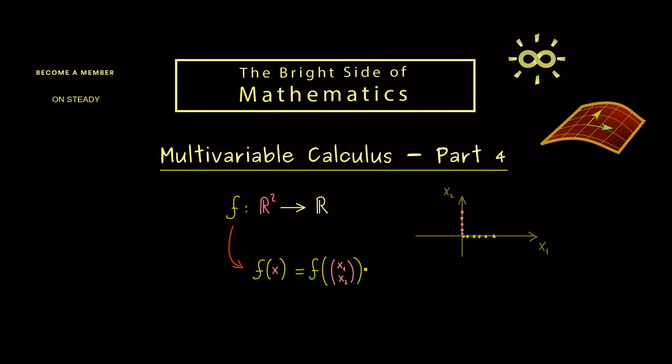So obviously this is the same thing, but here we explicitly write the components. However, most of the time it's not very suitable to write it in this column form, and therefore we have another notation as well. There we just put the components as independent variables into the function. So formally you see some differences here, but in the end they all represent the same function.